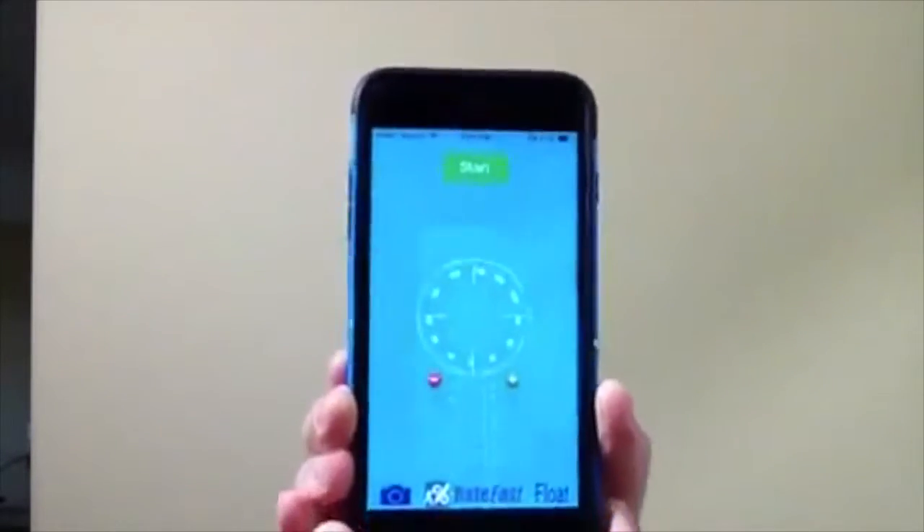To put the RateFast Goniometer into ghost mode, simply touch on the camera on the left lower corner. Now you are looking at your subject through the viewfinder with the RateFast Goniometer over the top of the image.